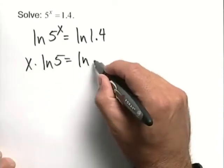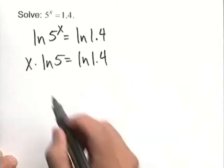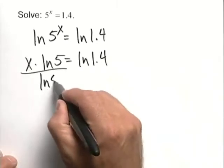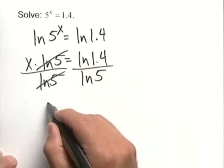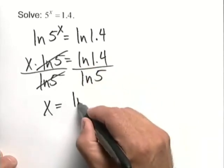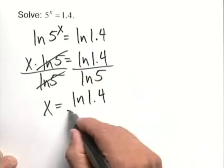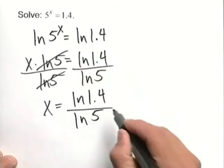That's still being equal to the natural log of 1.4. We can solve completely by dividing both sides by the natural log of 5. Those cancel and we have our answer. This is equal to the natural log of 1.4 over the natural log of 5.